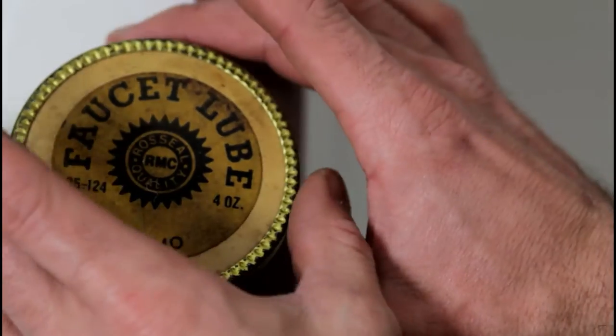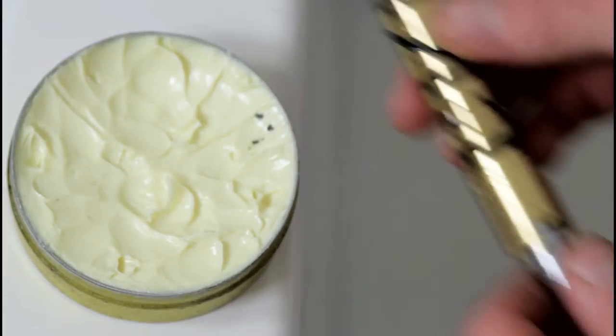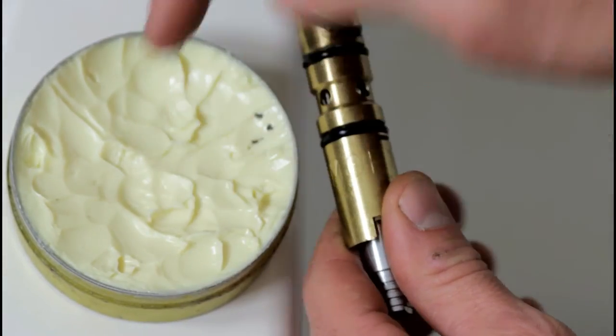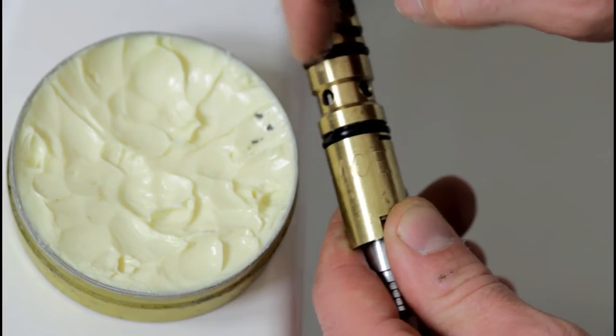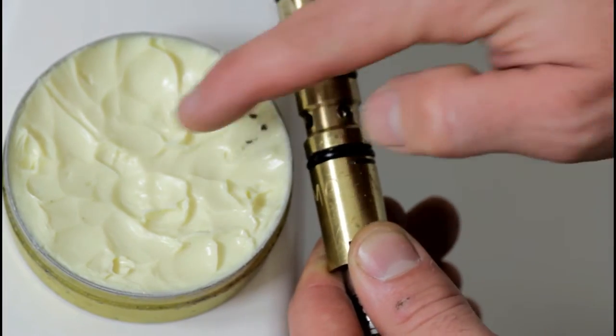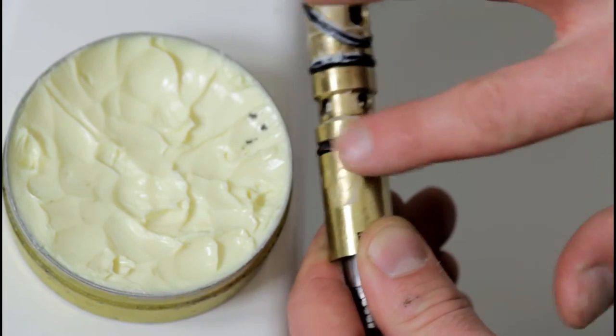Whichever method you prefer, grab your new or refurbished cartridge and apply a lot of faucet lube to it so that everything is well lubed when you insert it back in place, so you get a nice smooth operation out of it.